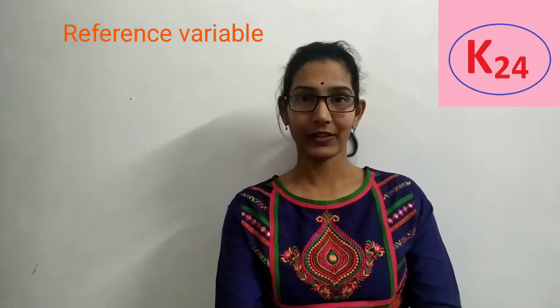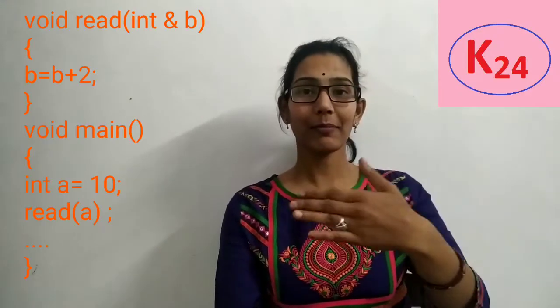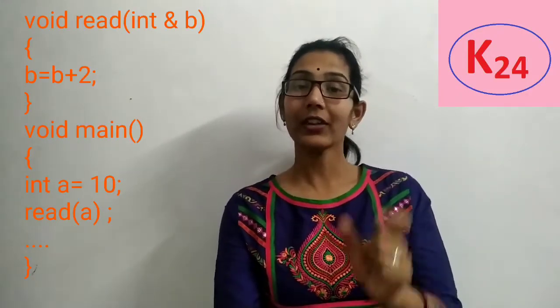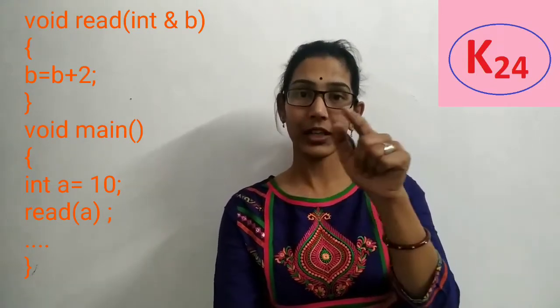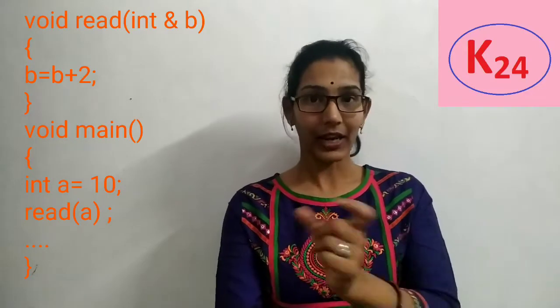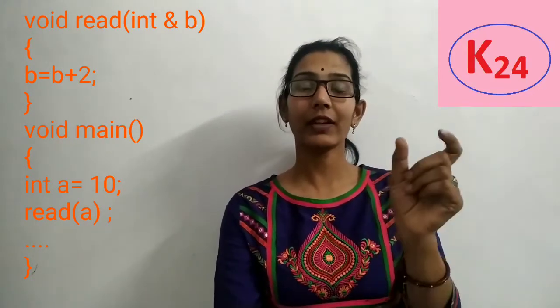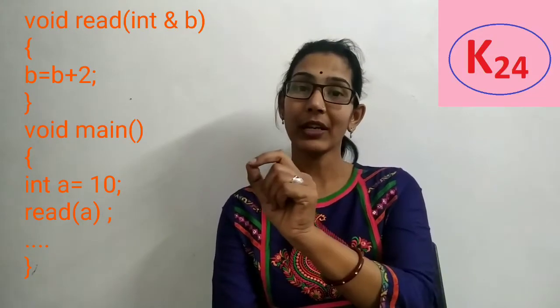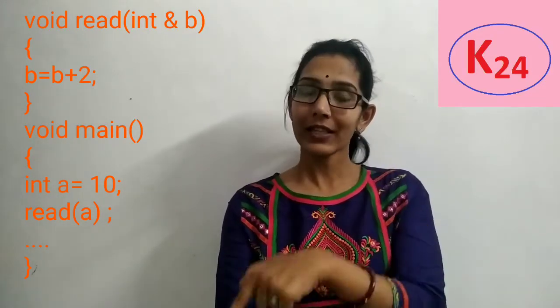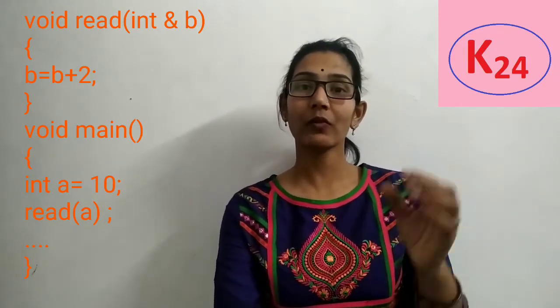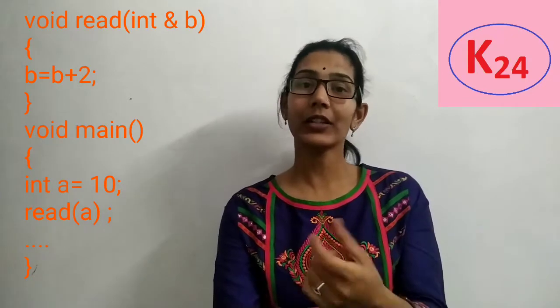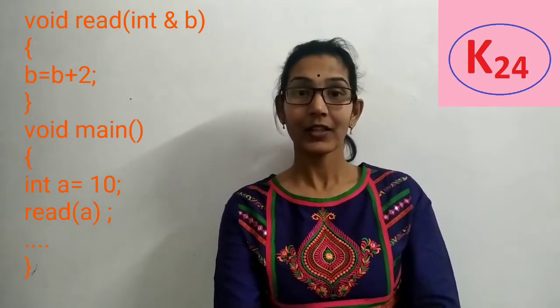For example, in a read function, we set value 'a' equal to 10 and pass it in the calling function. In the definition of the read function, we use int& b — so 'a' is the simple variable in the caller and 'b' is the reference variable in the function. Any change made to either variable will reflect on both sides. This is the main use of reference variables: passing arguments to functions.